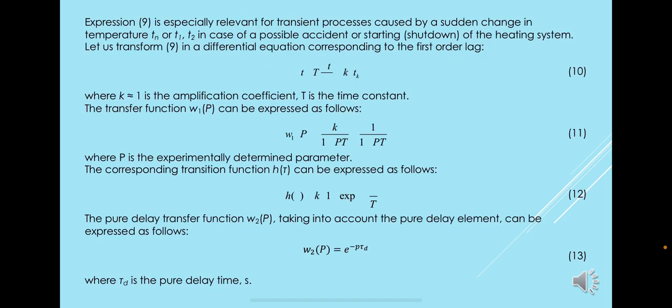Expression 9 is especially relevant for transient processes caused by a sudden change in temperature TN or T122 in case of a possible accident, starting, or shutdown of the heating system. Let us transform equation 9 into a differential equation corresponding to the first order lag.